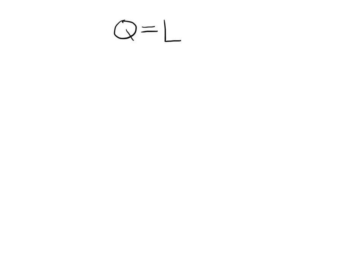Now let's see how we can solve the minimization problem for the Cobb-Douglas production function using a little bit of calculus. Say you knew the production function for a firm had the following form: Q equals L to the power of 0.6 and K to the power of 0.4.